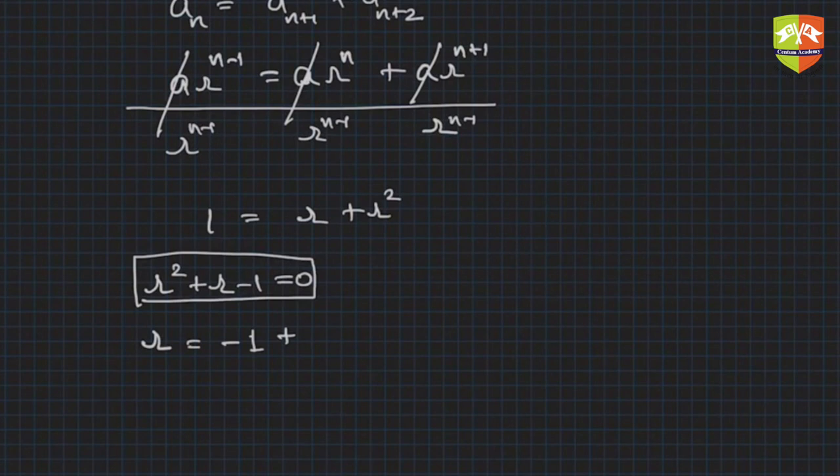So root over b squared, that is 1 minus 4ac, that is plus 4, so minus 1 plus root 5, divided by 2. So minus 1 plus root 5 over 2.